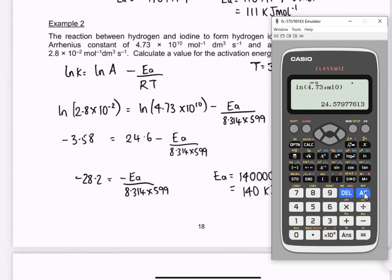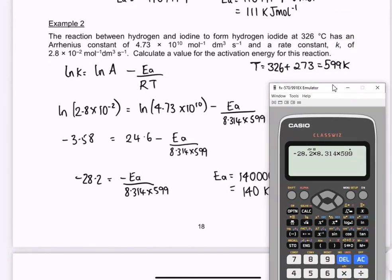Now when you take those away, you get minus 28.2. And if you take that and times by 8.314 and our temperature, which in this case was in degree C, so I had to convert it to Kelvin. I did that there, 599.